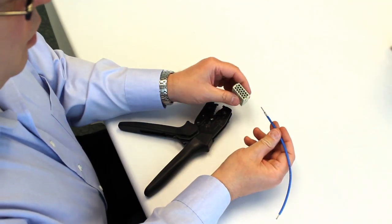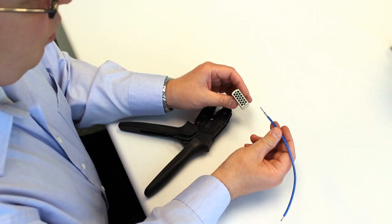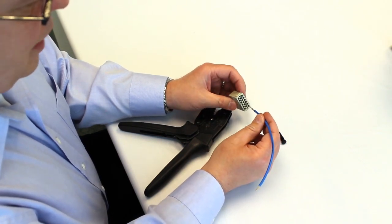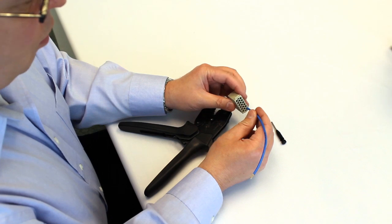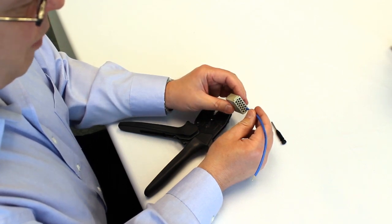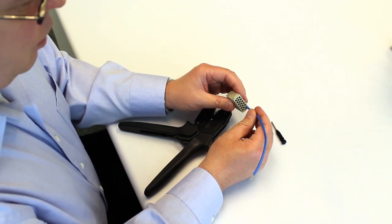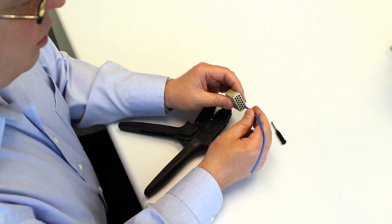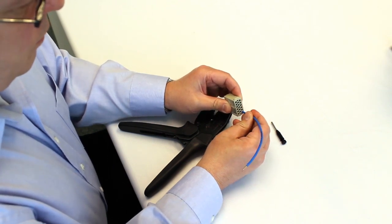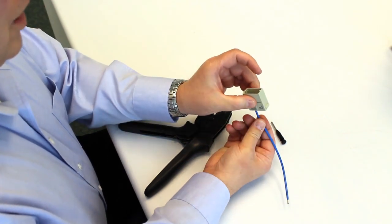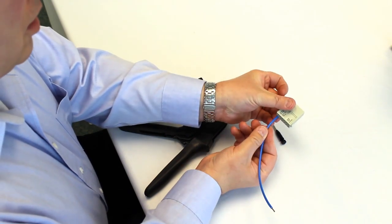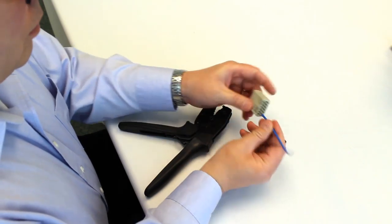To insert it into an insert or a module, the contact goes into the rear of the module or insert. In this case, it's a module for our Han modular range. And you'll hear it and feel it click into place. So now it's correctly installed in this module.